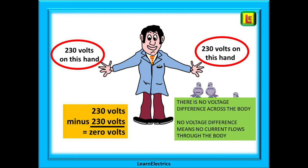Just to reiterate: 230 volts appears on each hand during the fault because Eric was touching the water pipes and the socket casing when the fault occurred. 230 minus 230 equals zero volts, so there is no voltage difference across Eric's body. No voltage difference means no current — Eric is safe. Fractions of a second later the fuse blows and everything becomes zero volts, a condition of safety.